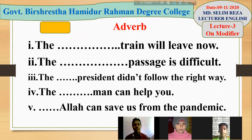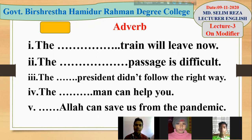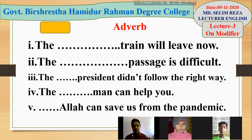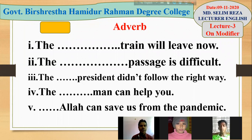Now, adverb is a kind of premodifier. When an adverb takes the place before a noun and gives extra information about that particular noun, it is called a premodifier. Adverb is of different kinds — adverb of time, adverb of place, adverb of manner, adverb of degree, and so on. These kinds of adverb may take place before a noun and give extra information about it, and then it will be called a premodifier.